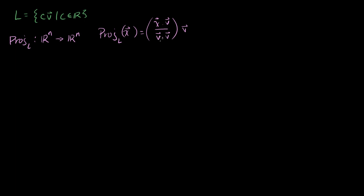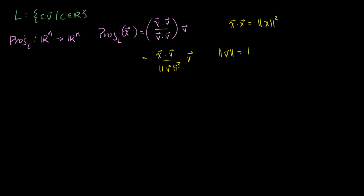Now, when you dot a vector with itself, we know that is equivalent to the length of the vector squared. So we could rewrite this as x dot v over the length of v squared, all of that times v. Wouldn't it be nice if the length of v was 1? If v is a unit vector, then our formula for our projection would just simplify to x dot v, times v.